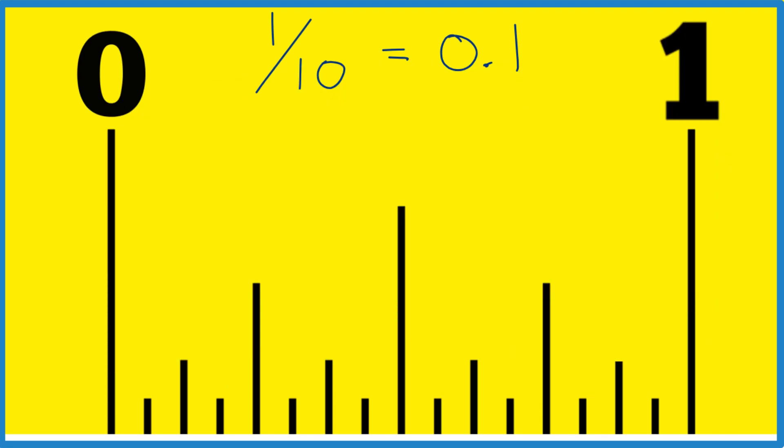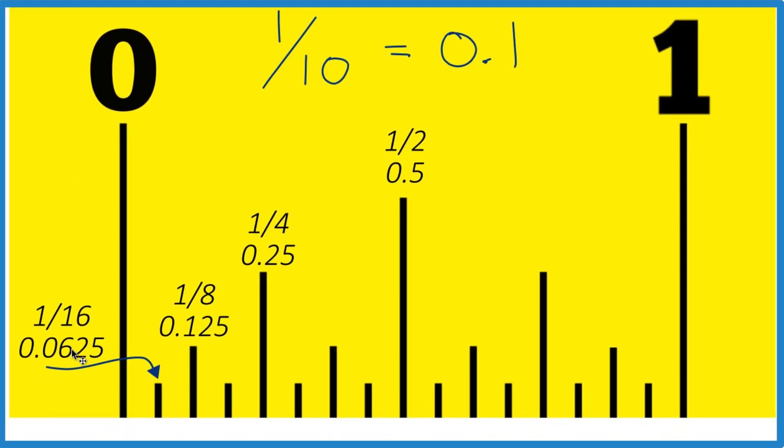But for our tape measure, our fractional tape measure, here's the way to think of it. So if we convert the fractions to decimals, half inch, one-fourth, one-eighth, and one-sixteenth, we're looking for 0.1. So you can tell right now it's 0.0625 and 0.1. It's going to be less than 0.1 but more than 0.0625, somewhere in here.